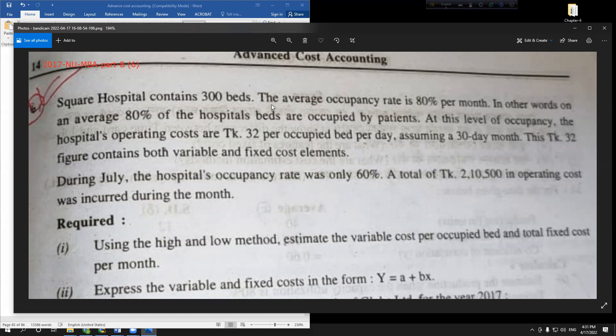At this level, the hospital operating costs are Tk. 32 per occupied bed per day, assuming a 30-day month. This 32 figure contains both variable and fixed cost elements.